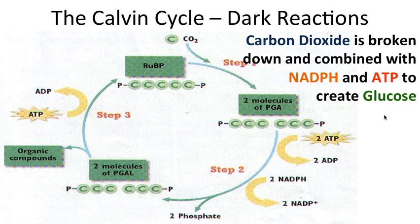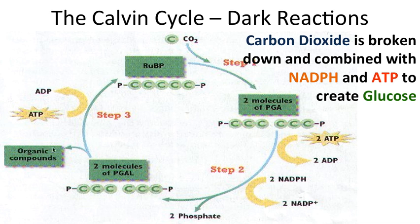The dark reaction is known as the Calvin Cycle. For this class, the most important thing to understand is that we need carbon dioxide, we use up ATP and NADPH, and the whole point of using those up is to make glucose. That's the whole point — to make glucose.